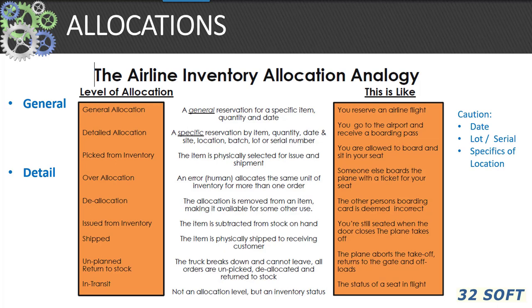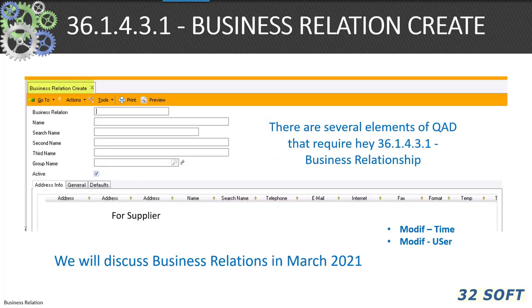Allocations are defined as uncashed stockroom receipts — they are general and detailed. Dates can play a very important part in the execution of material in future and current statuses. Please review the allocation matrix, as allocations can be somewhat daunting to execute properly. In 36.1.4.3.1 business relationship, there are several elements of QAD that require business relationships.